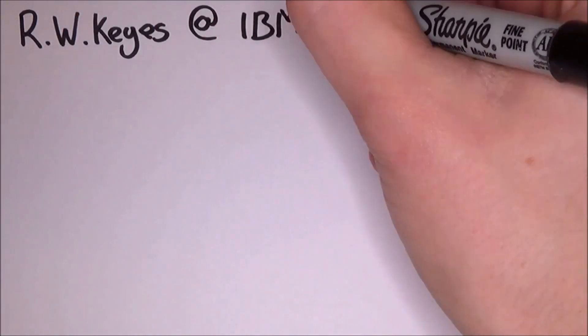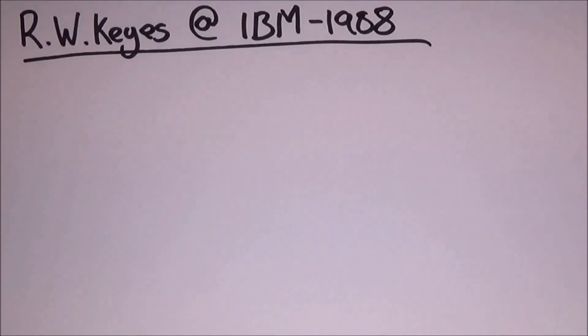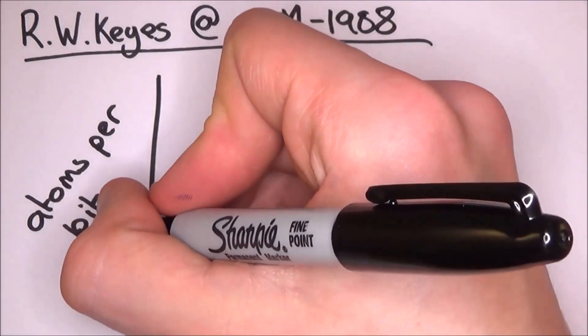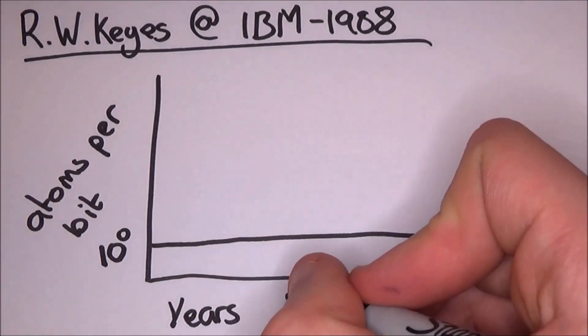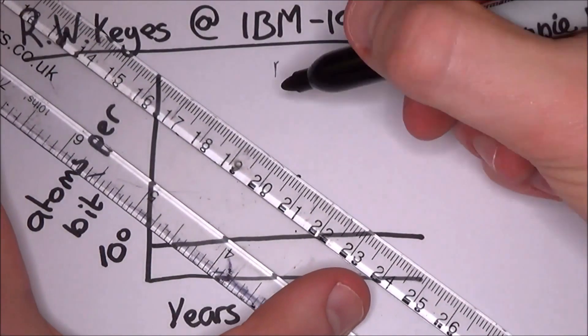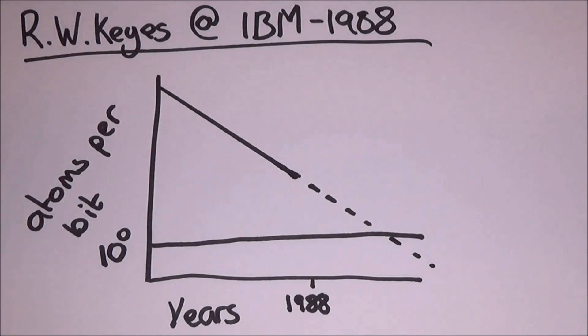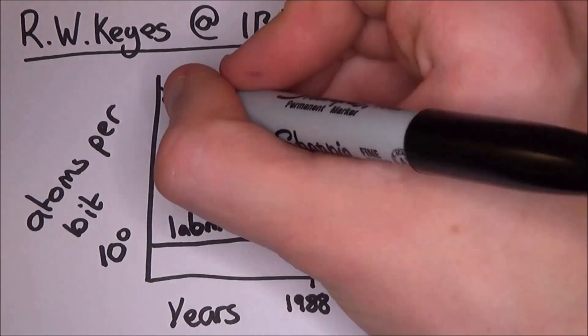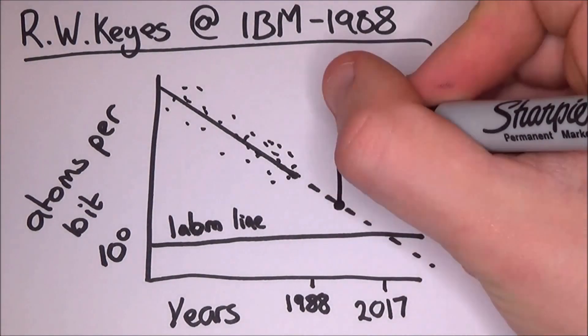R.W. Keyes at IBM in 1988 made a graph, a very particular graph, and you might actually be familiar with this graph. It is the number of atoms to hold one bit of information against time in years. And so he plotted a load of points back then and made a guess of where it was going in the future, and he made pretty dead-on actually.